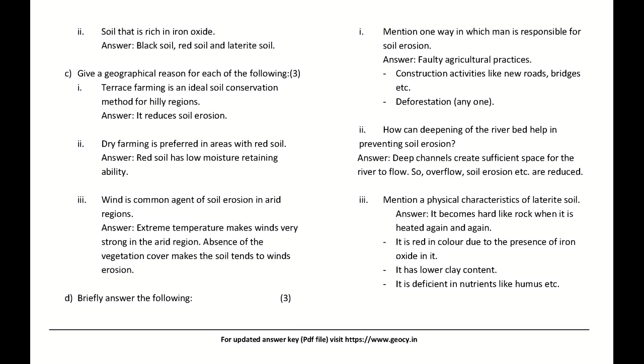How can deepening of the river bed help in preventing soil erosion? Answer: Deep channels create sufficient space for the river to flow, so overflow and soil erosion are reduced. Mention a physical characteristic of laterite soil: It becomes hard like rock when heated repeatedly, is red in color due to iron oxide, has lower clay content, and is deficient in nutrients like humus.